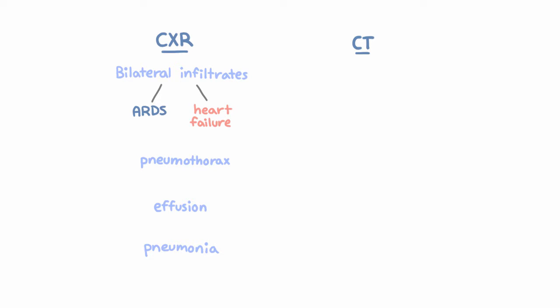CT of the chest can be useful when the x-ray fails to definitively reveal the cause of hypoxemia. For example, a CT can help you distinguish ARDS from other causes of respiratory failure that would require specific treatment. These can include atypical infections or inflammatory lung diseases.